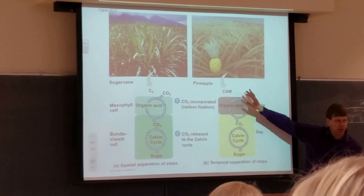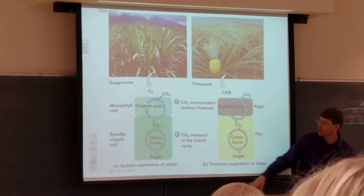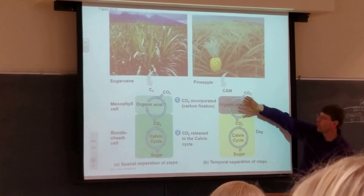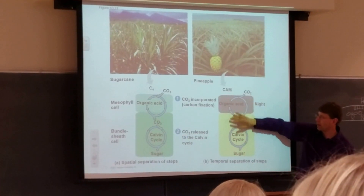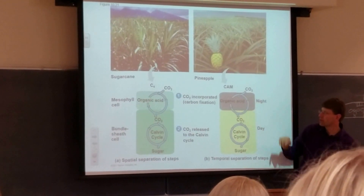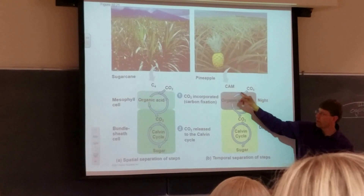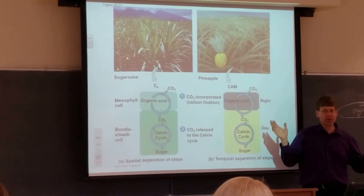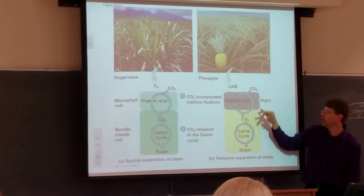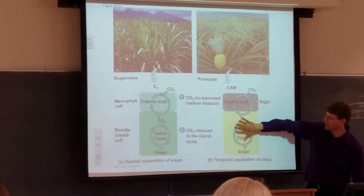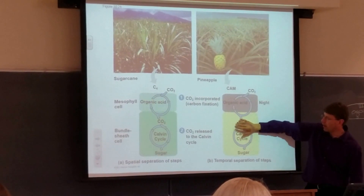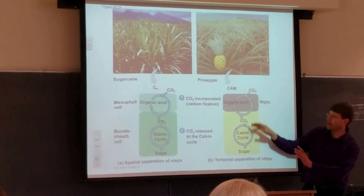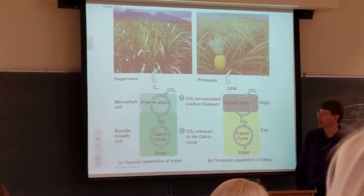This figure has a couple of things that are a little confusing. There are two different cell types in C4, but here there's just one cell type — these are not different cell types. This is a mesophyll cell, which is just a plain photosynthetic plant cell at night; this is the same cell during the day. I don't like the fact that they made them different shapes — they should have just made the same shape.